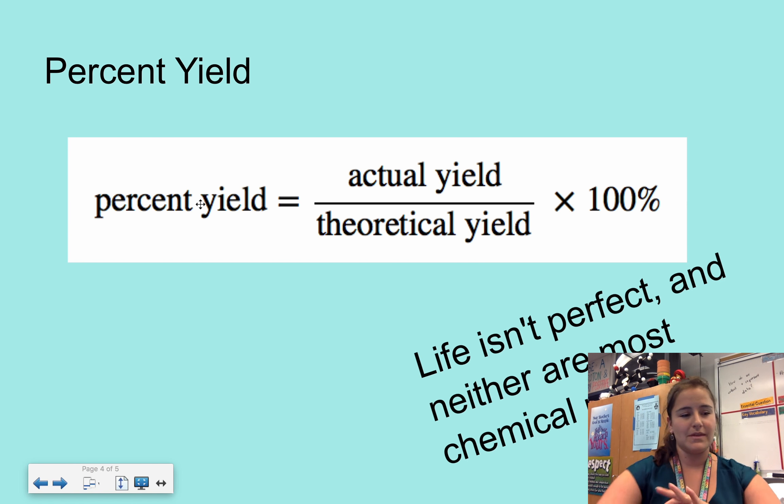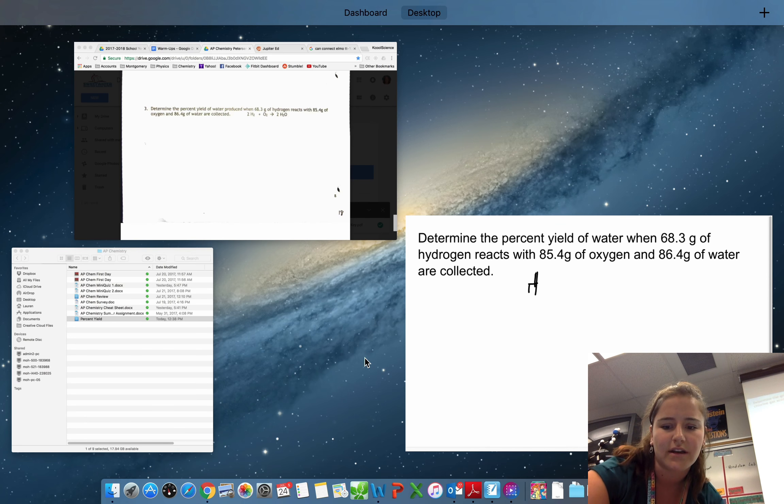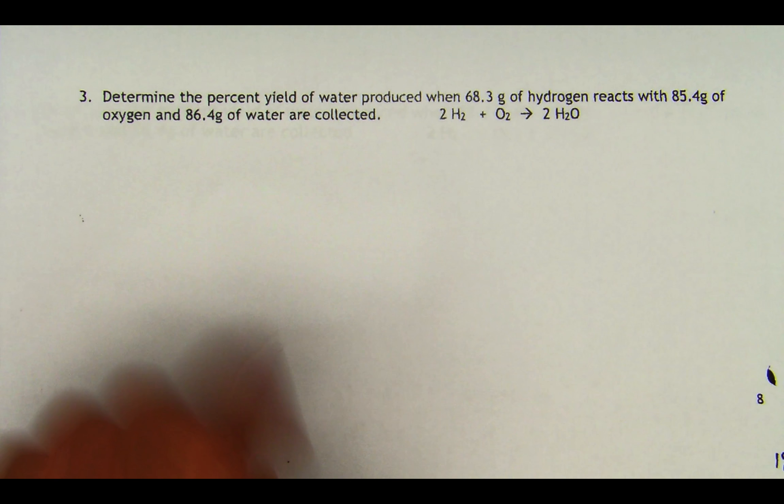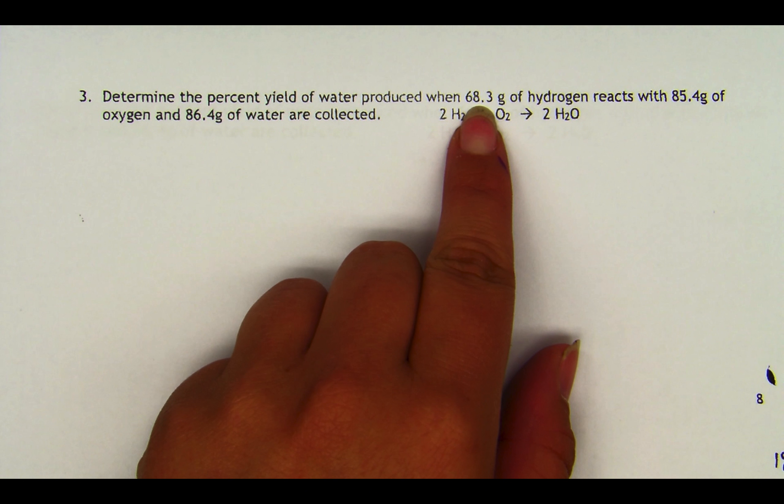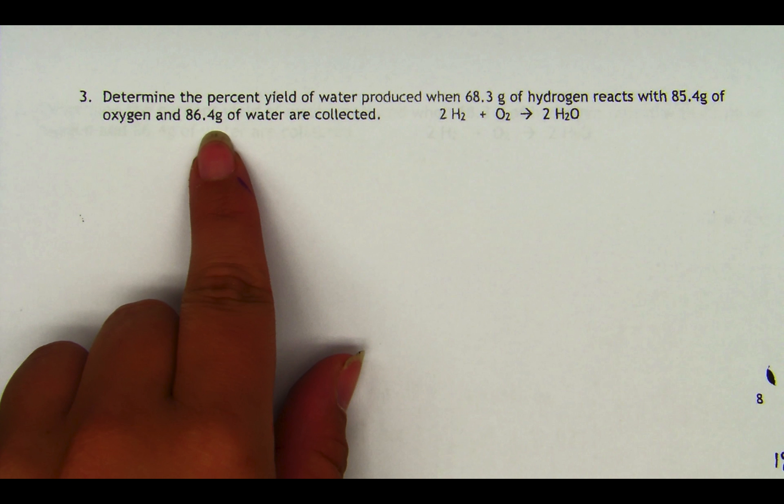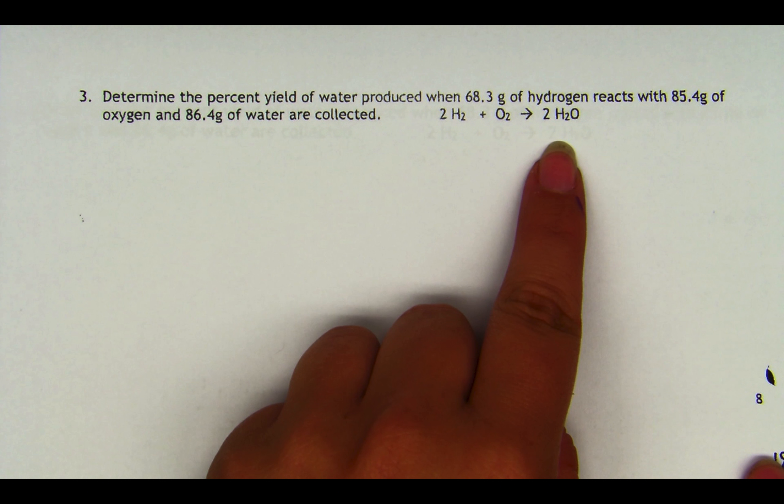So we're going to work through a problem that ties in all of these things. If you are working on your summer assignment, it is number three under limiting reactants and percent yields. This problem says determine the percent yield of water when 68.3 grams of hydrogen reacts with 85.4 grams of oxygen and 86.4 grams of water collected. Here's the balanced chemical reaction that we're looking at.